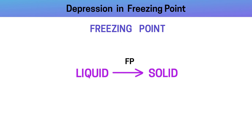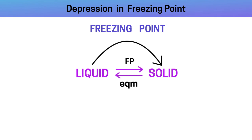अब इसको हम detail में समझते हैं। यहाँ पे जो arrow है इसको हम change करते हैं double arrow से — इसका मतलब हुआ कि freezing point वो temperature है जिस पे liquid और solid दोनों equilibrium पे हो। यानि कि जितना liquid solid में convert हो रहा है उतना ही solid वापस liquid form में भी convert होगा। Freezing point वो point है जिस पे liquid और solid दोनों equilibrium पे हों।